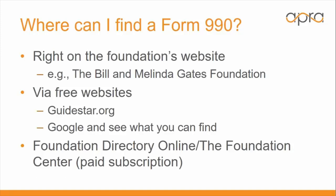So now you might be wondering: where can you find a Form 990? A lot of times for high-visibility, large-scale foundations they can be right on the foundation's website — this is the case with the Bill and Melinda Gates Foundation, which we'll be looking at specifically in the next couple of slides. You can also go to free websites like Guidestar.org or simply search Google for the foundation's name plus 'Form 990.' There's also the Foundation Center's Foundation Directory Online, a paid annual subscription resource where you can look for Form 990s, sometimes going back multiple years.